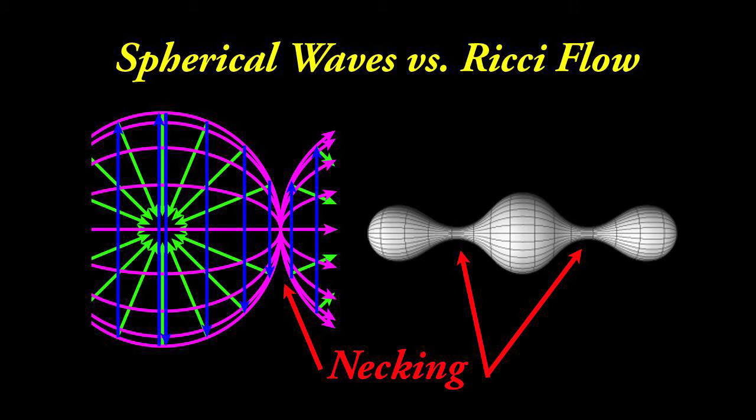If you are a superstring mathematician, then consider the concept in this graphic. On the left is a spherical wave — this is an actual physical object. It has three physical fields: the electric, the magnetic, and the gravitational fields. The wave has a necking point. On opposite sides of the neck, there are three fields, and these fields on the opposite sides of the neck interact with each other. There is a physical interaction.